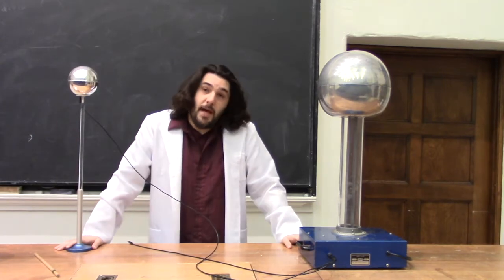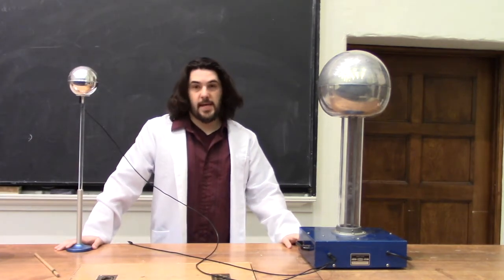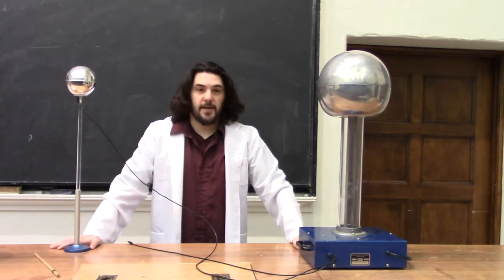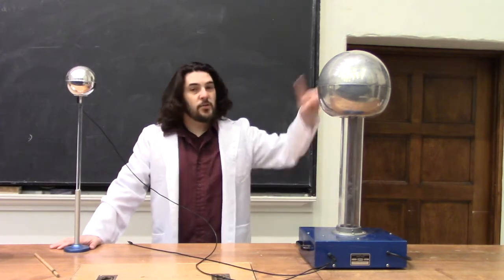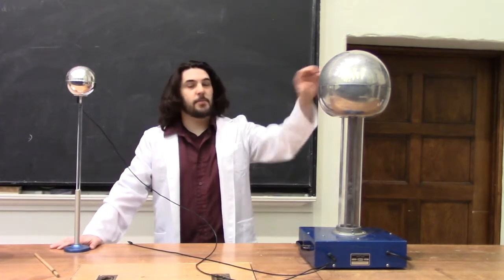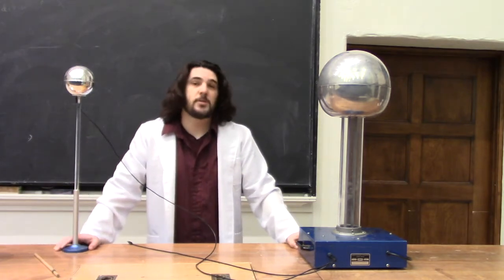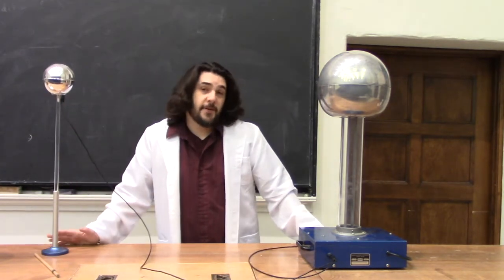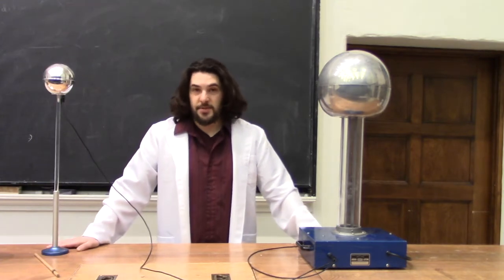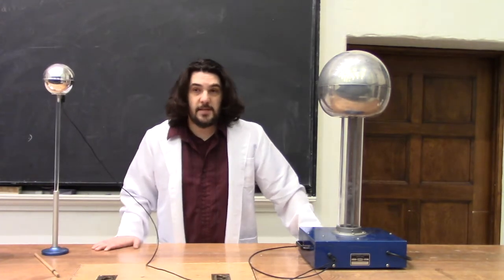A Van de Graaff generator is a popular tool for talking about electrostatics. With the triboelectric effect, this belt is able to continuously deposit charges on this upper sphere, so you can develop potentials in excess of 100,000 volts. There are a lot of fun things you can do with that sort of potential. The simplest and most obvious would be making sparks.